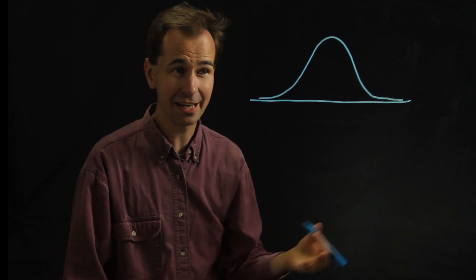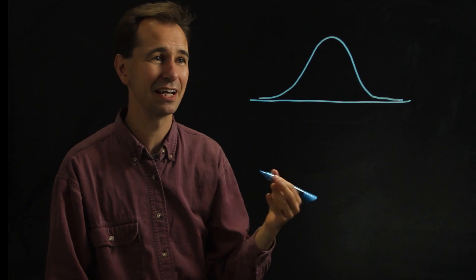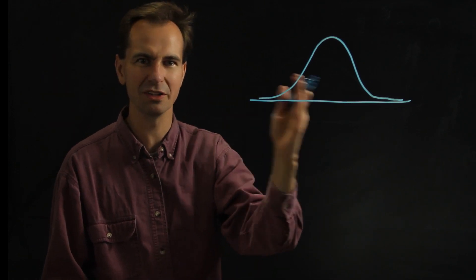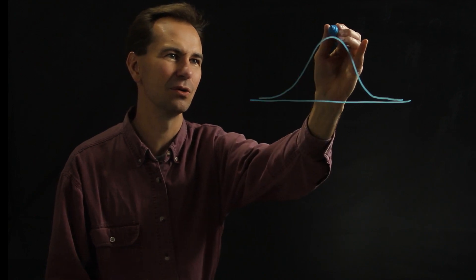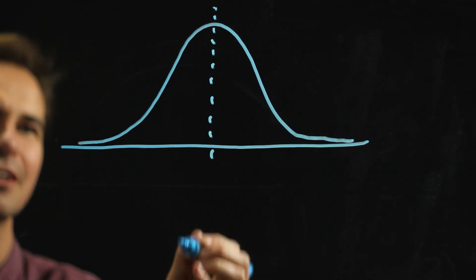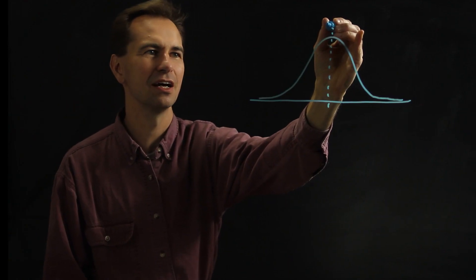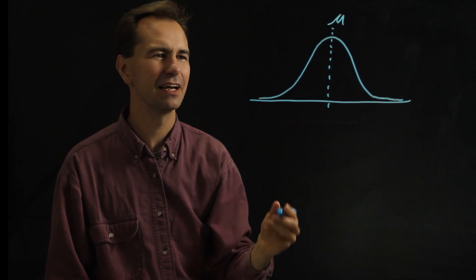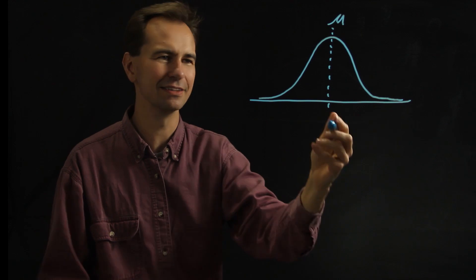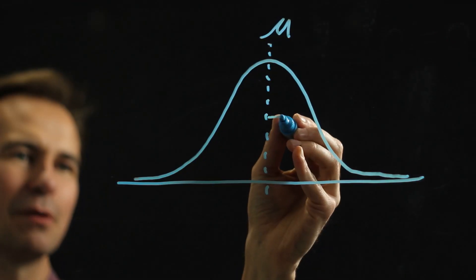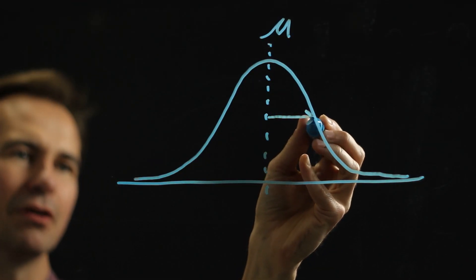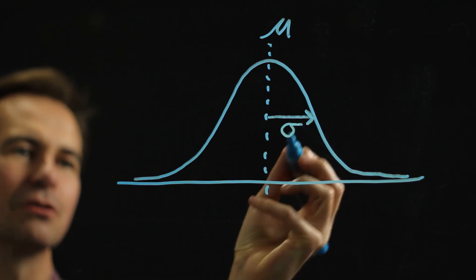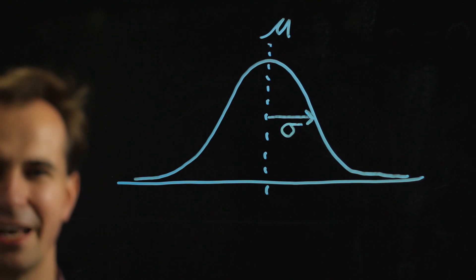And every Gaussian distribution has two ways that you can describe it. One is where its middle is located, so where that center is. And we usually use a symbol called mu to explain that. And then the second is how wide it is. For example, from the middle out to about the edge of it right there, that's called the standard deviation. And they use the Greek symbol sigma to represent that.